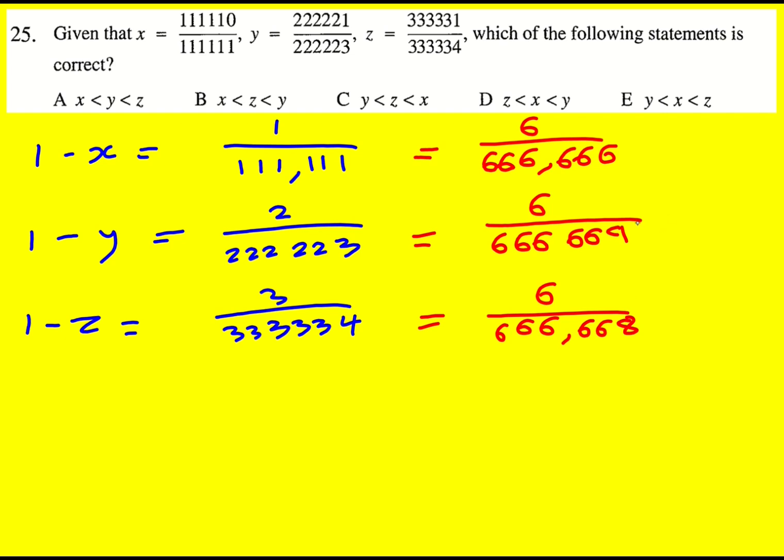So when we divide by a bigger number, the result is going to be smaller. Therefore, this one is the smallest, therefore y is going to be the biggest, because this will be the closest to one. And then z will be the second biggest, because this is the second smallest. And x will be the smallest, because it's the furthest away from one. So a really nice way of getting the answer is going to be B.